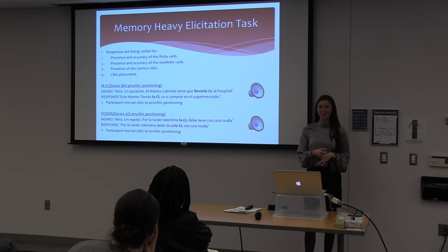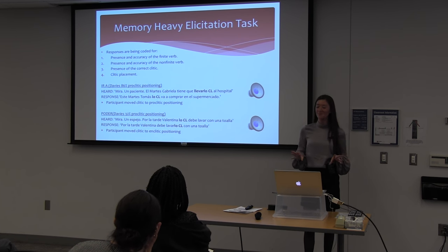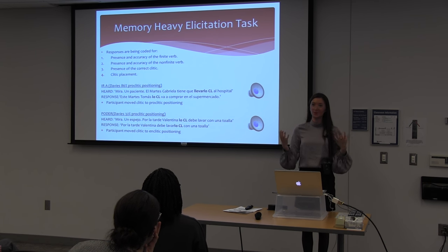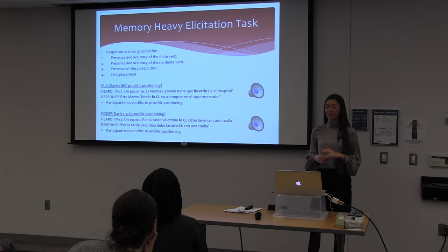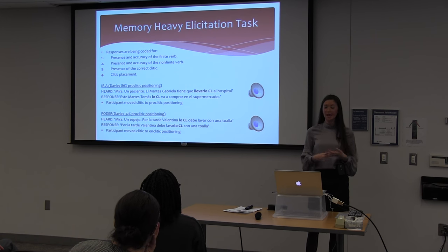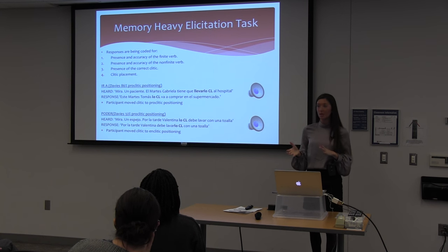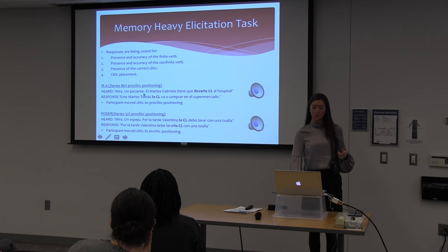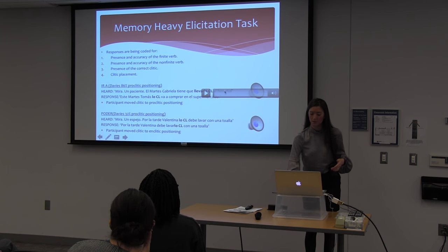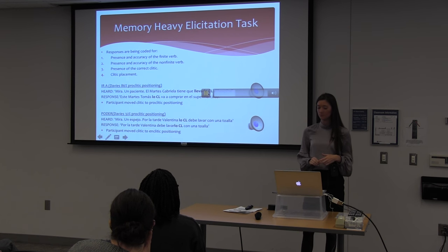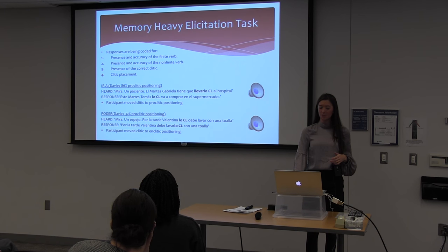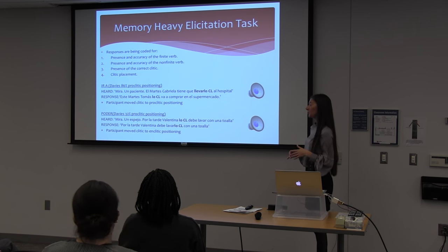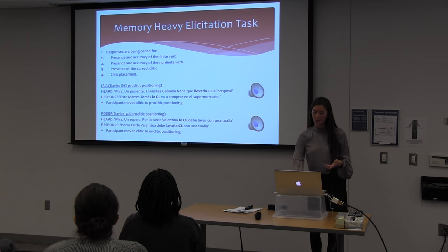We are currently still coding the data for the memory-heavy elicitation task. It's proven a little more difficult to pull out those clitics from the sentence and ensure it's not just depending on their variety of Spanish. We're working with native speakers to ensure valid coding. Tokens are being coded for presence and accuracy of the finite and non-finite verb, presence of the correct clitic, and clitic placement. For example, in an ir a trial — where Davies found 86% proclitic — we heard a participant produce: 'Este martes, Tomás lo va a comprar en el supermercado,' moving the clitic to proclitic position. For poder at 32% proclitic, we saw them switch to enclisis.